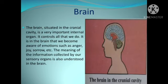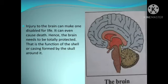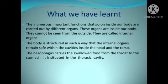Brain. The brain, situated in the cranial cavity, is a very important internal organ. It controls all that we do. It is in the brain that we become aware of emotions such as anger, joy, sorrow, etc. The meaning of the information collected by our sensory organs is also understood in the brain. Injury to the brain can make one disabled for life or even cause death. Hence the brain needs to be totally protected — that is the function of the shell or casing formed by the skull around it.